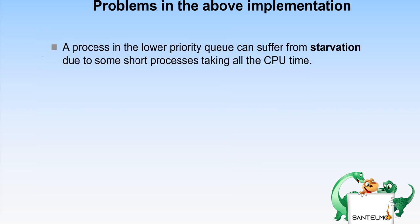A problem in this implementation is that a process in a lower priority queue can suffer from starvation due to short processes taking all the CPU time. A simple solution is to boost the priority of all processes at regular intervals and place them all in the highest priority queue.